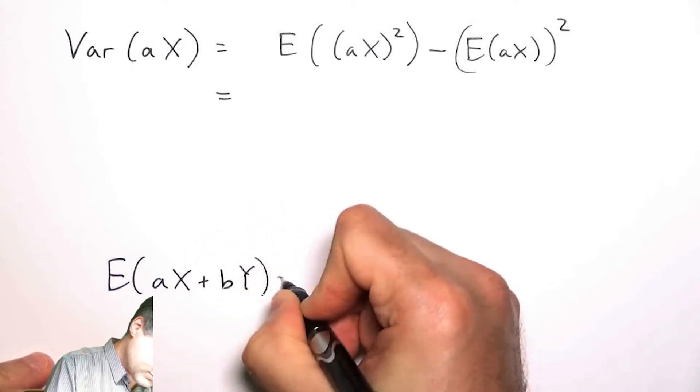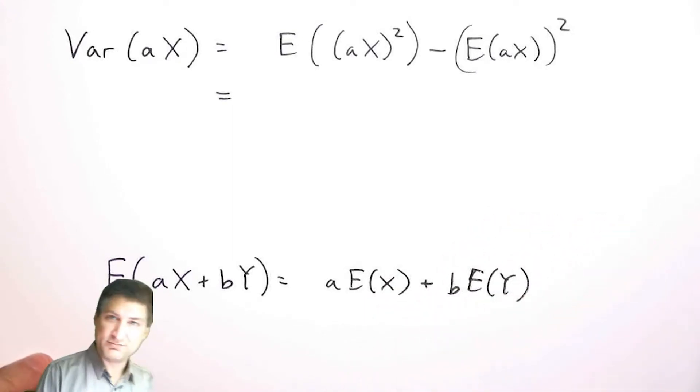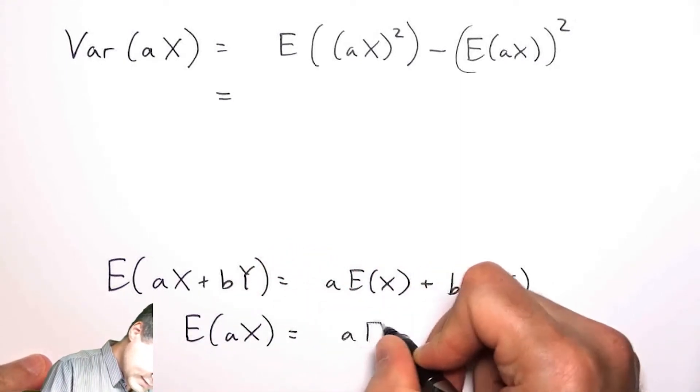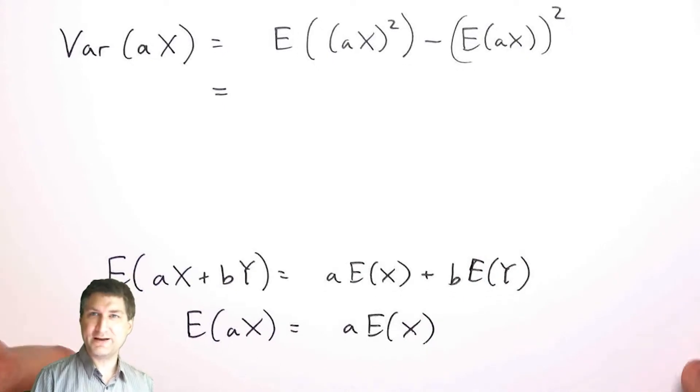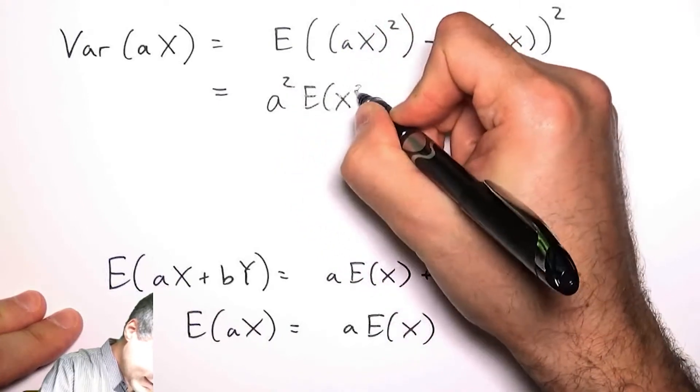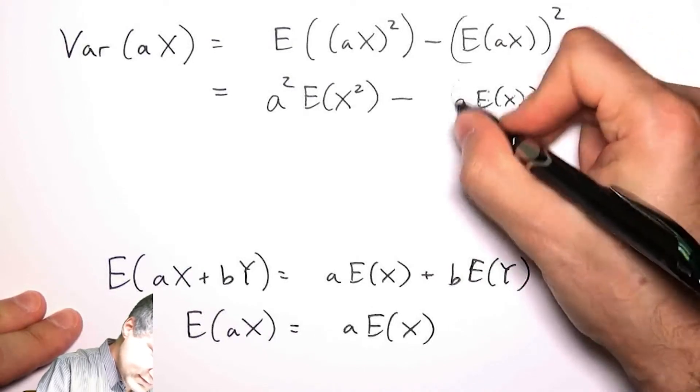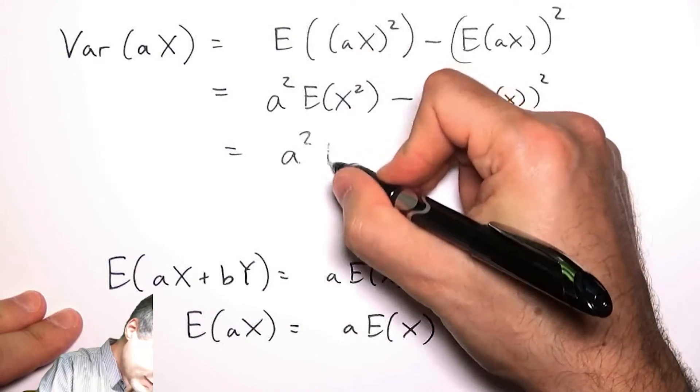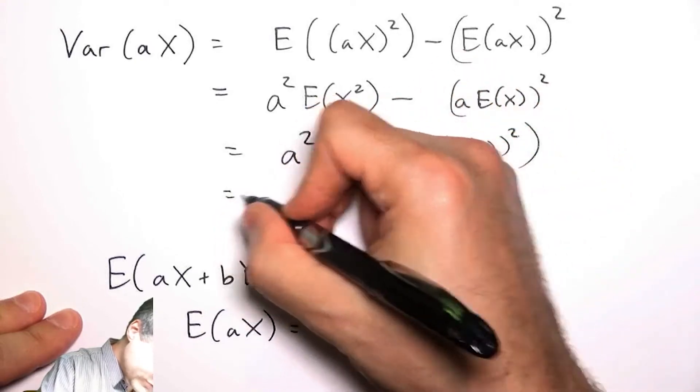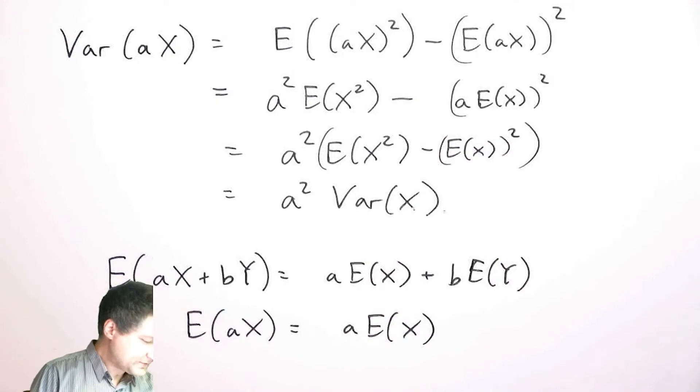I can kind of pull out things this way, and I also know the expected value of aX is just a times E(X) if I pull out the constant. Here I'm pulling out an a squared from here and here I've got a squared here, so what I have basically is a squared times this thing, which is just a² times the variance of X. This is a handy thing to know, and these are good handy properties in general to know about expected values.